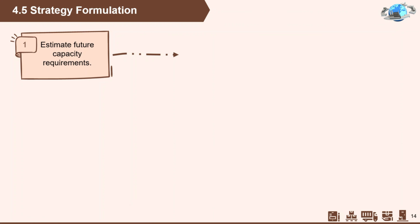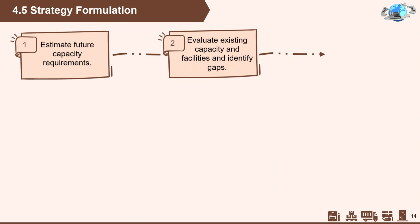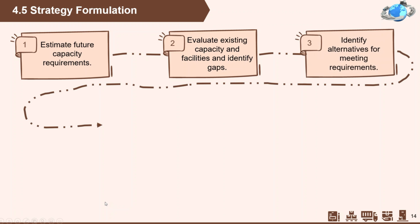Now let's discuss the steps in capacity planning. First, estimate future capacity requirements — this can be done by using historical data such as sales reports from past months or last year. Next, evaluate existing capacity and facilities and identify gaps. Does the existing design capacity work for the demand you currently have? Is there a way to bridge that gap, like getting another piece of equipment to double the design capacity? This type of evaluation based on current business capacity is important in choosing the right strategy. Next, identify alternatives for meeting requirements.